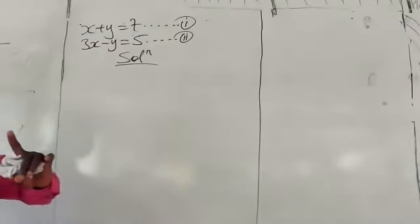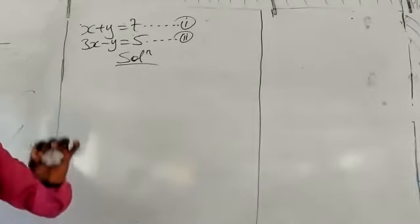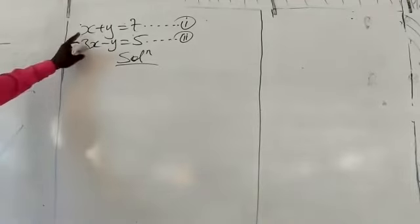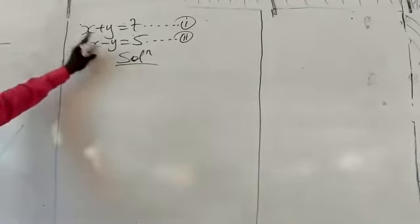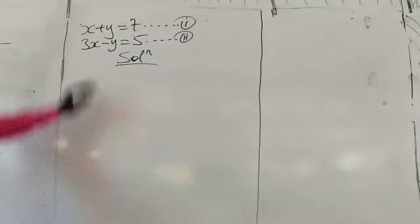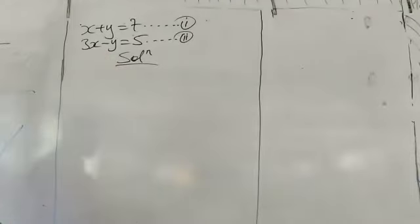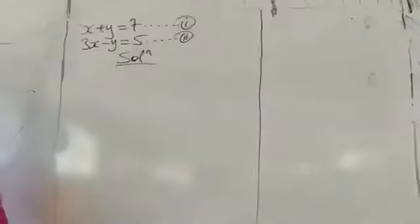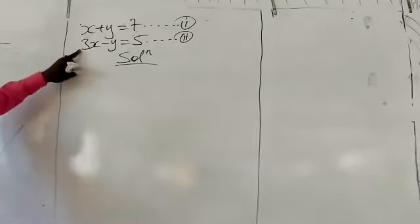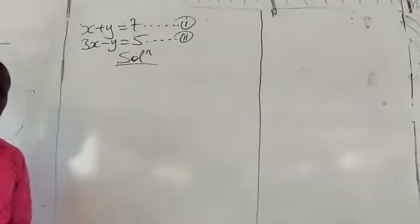In simultaneous equations, we have to find the values of the letters given in the question — meaning that we have to find the value of x and then we find the value of y. To find the value of x or y, what we need to do is add equation 1 and equation 2. You might wonder why we want to add.